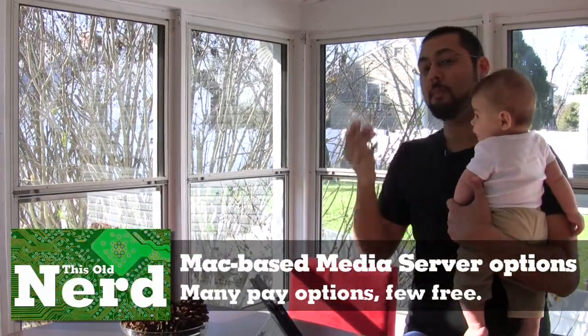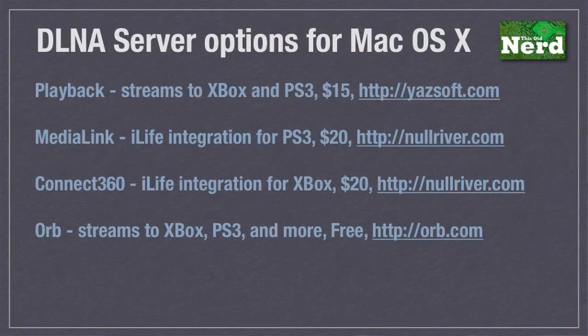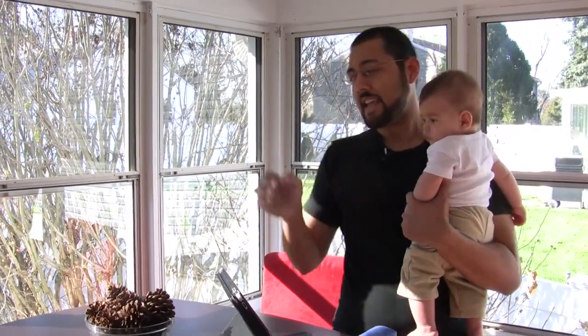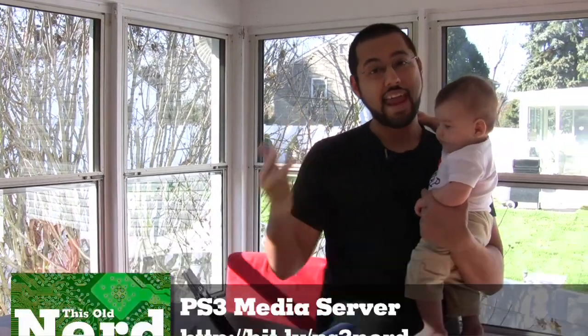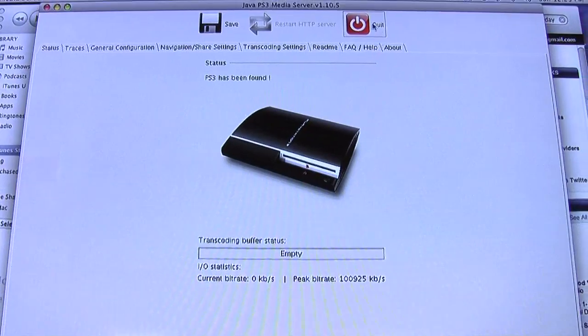If you have a Mac as your media server, you don't have the same built-in sharing options Windows 7 has - Apple didn't include them. You need to make your Mac a DLNA server. There are pay options: Playback costs $15 and worked well in our tests. Null River has two pieces of software - Media Link for PS3 or Connect360 for Xbox 360 - but you have to buy two separate pieces of software if you have both systems. There's also Orb, which is free, but we had playback issues and lost all media controls. What we're going to focus on is PS3 Media Server, a free cross-platform piece of software written in Java that runs on Linux, Windows, and Mac.